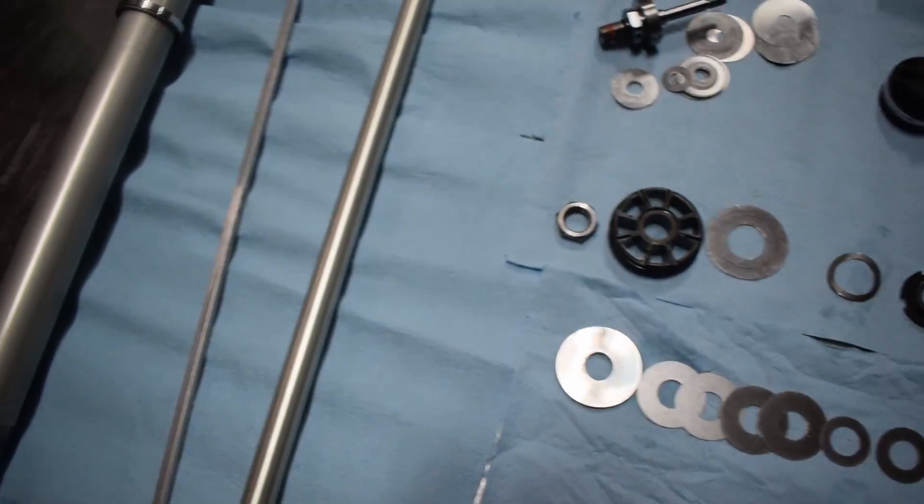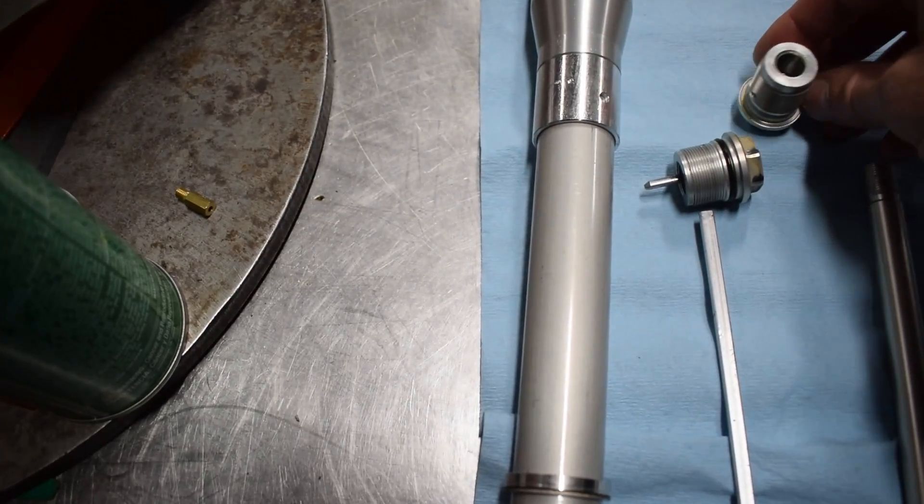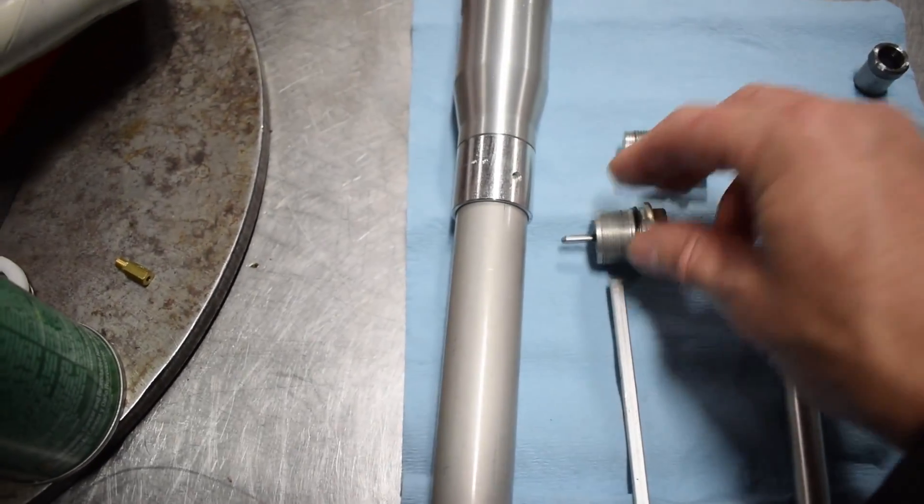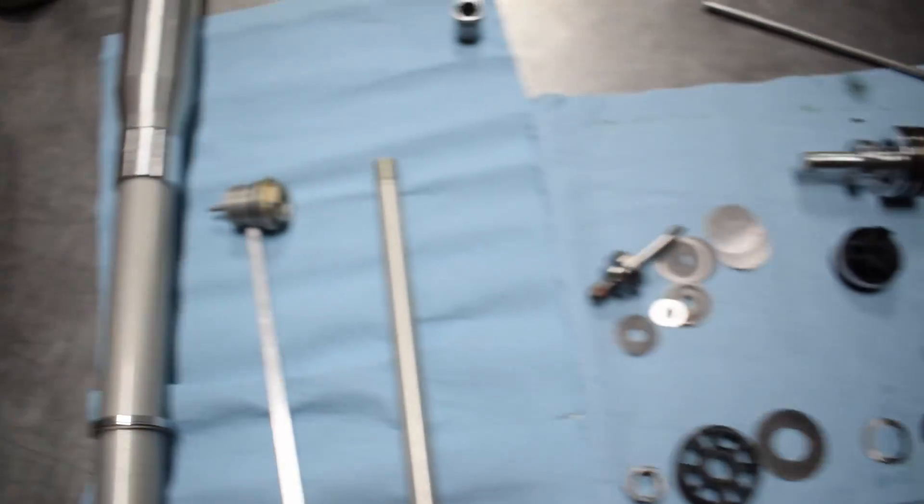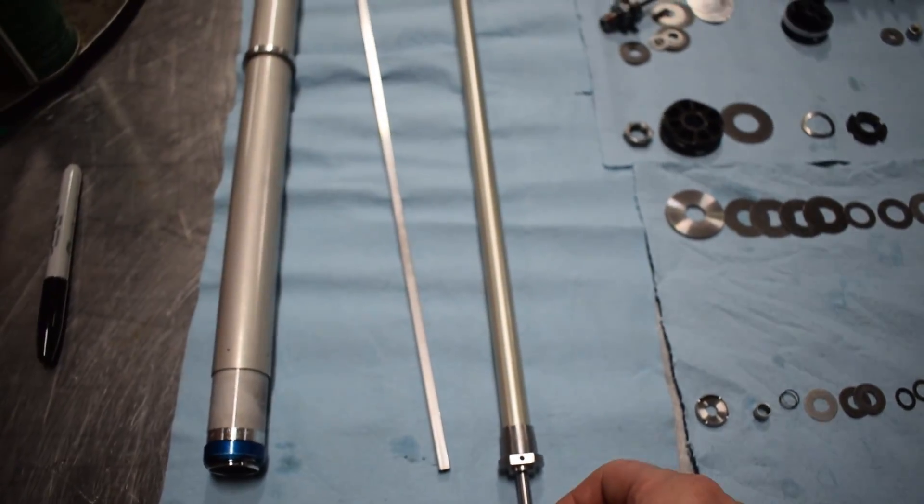Same thing. Here's the KYB adjuster. They're slightly different, but if you get inside of there, it looks the same as this. And it goes in and out, and it moves the rod up and down and pushes the needle in and out of the fork.